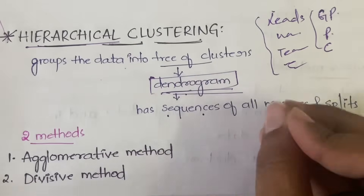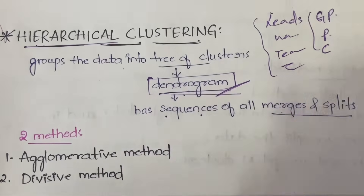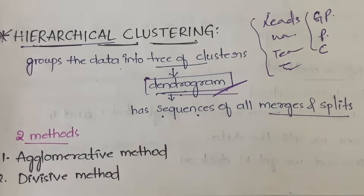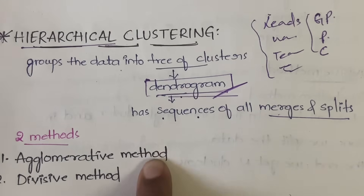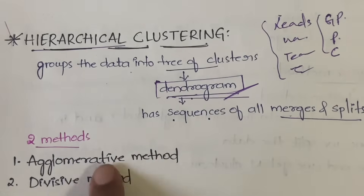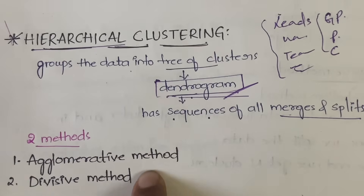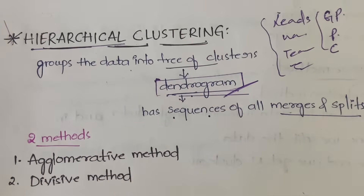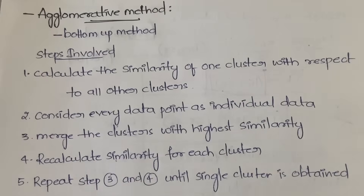In hierarchical clustering we have two methods. We can either use the agglomerative method or the divisive method. Both are quite opposite to each other. So let us see what agglomerative and divisive each mean.